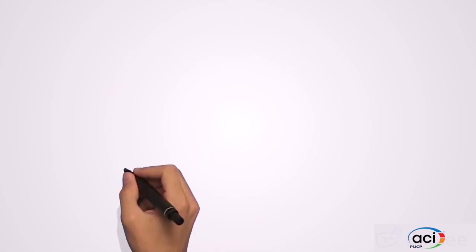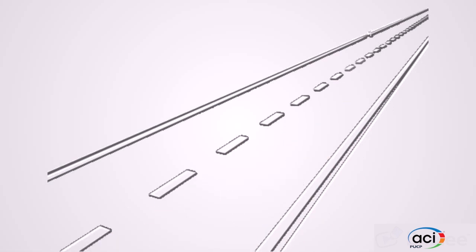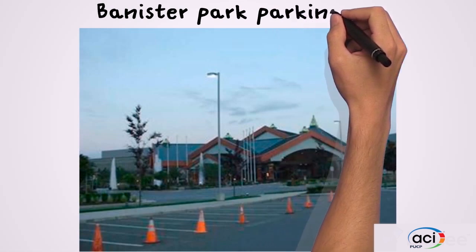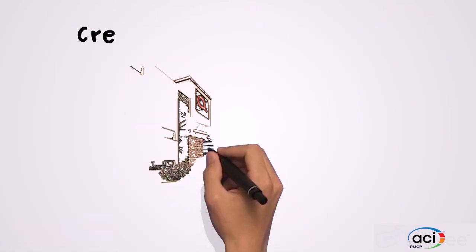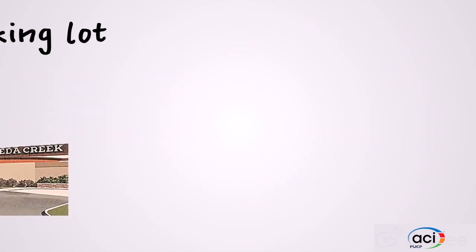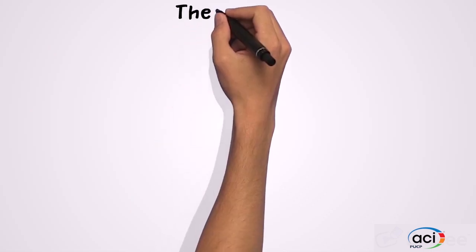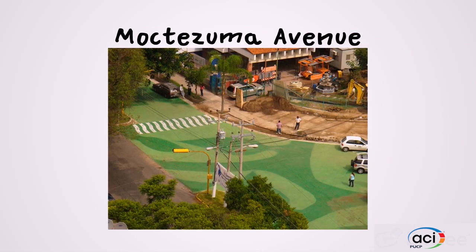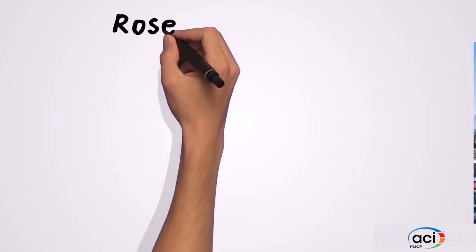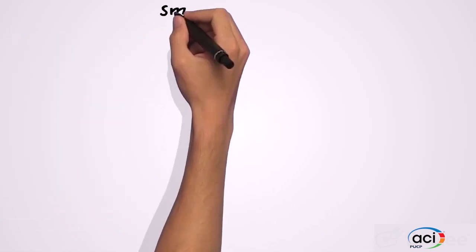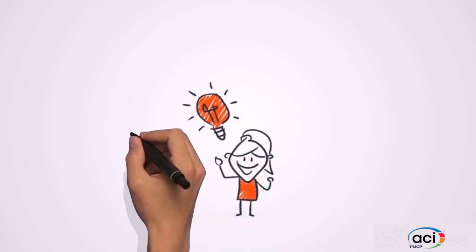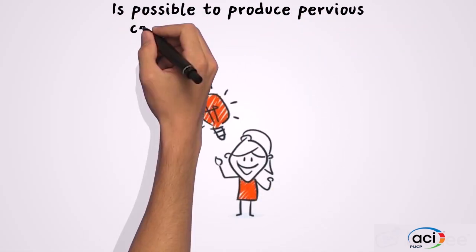The application of pervious concrete that stands out the most is in pavements, but currently it is used mainly in parking lots like Bannister Park parking lot in California in 2001, or Quilceta Creek Casino Parking Lot in Washington State, in platforms such as those built at the Oregon Zoo in Portland, in urbanization streets like the Central Square of Soyalong in Chiapas, or Moctezuma Avenue in Guadalajara, streets such as Rosemary Beach in Florida, small squares in Panama, and bike lanes in Minnesota.